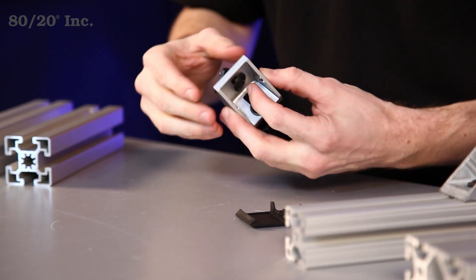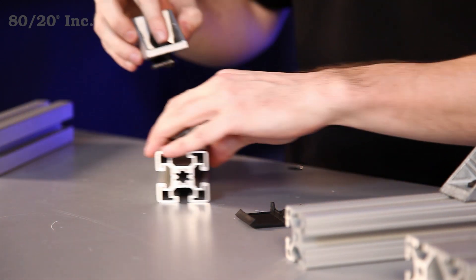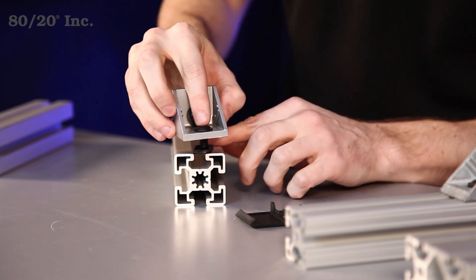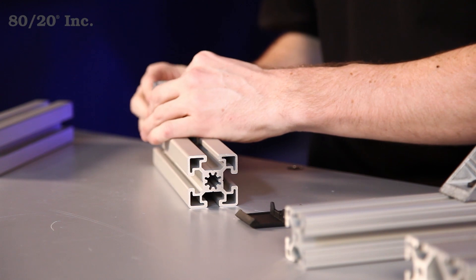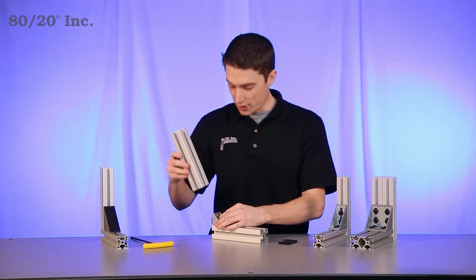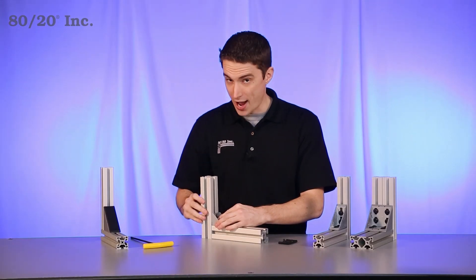Get that right on there. We'll take our first bar and slide the bracket right on. We'll get that into place. We'll take our other bar and slide it onto the other half of the bracket.